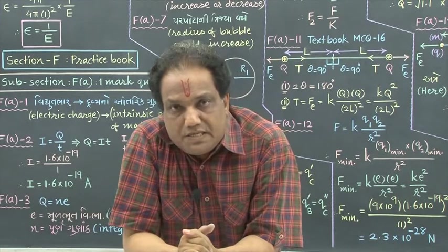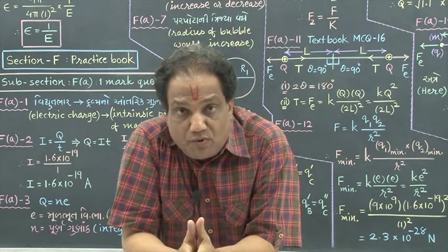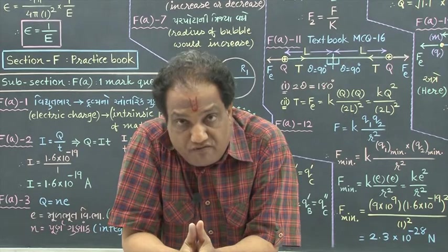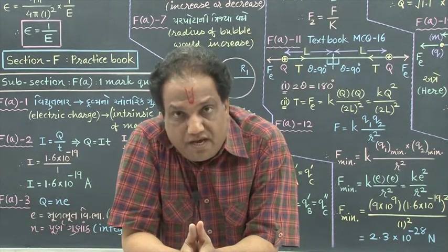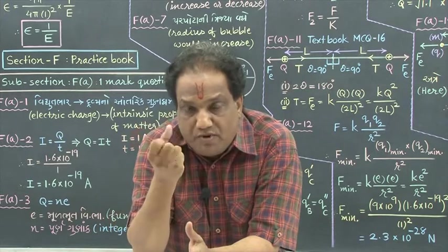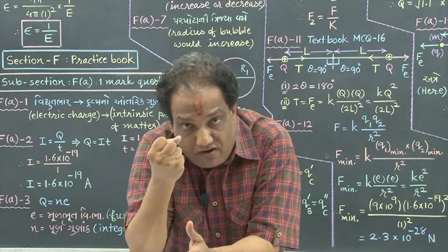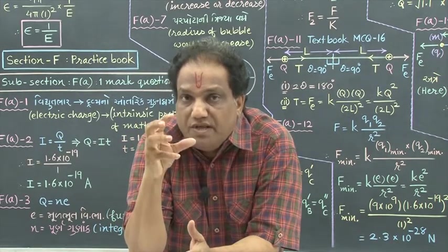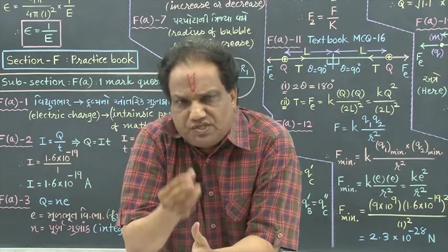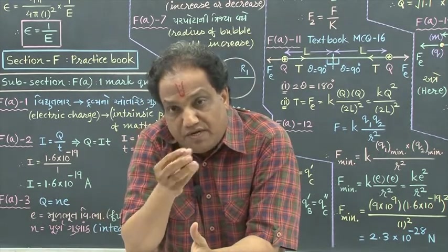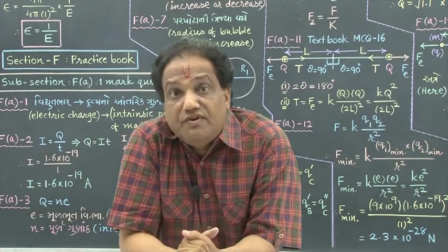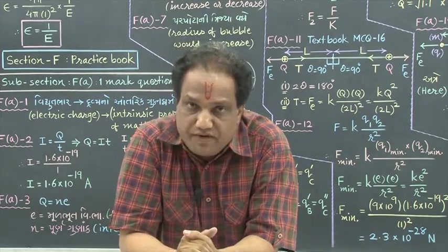It means that the strength of electric field in the surrounding region of a given electric charge will depend on the type of medium. So looking to this point, we have defined one quantity whereby we can have some measure of how much strength of electric field will be present in a given medium. Because for the same charge, if you keep it in different media, the strength of electric field is different.